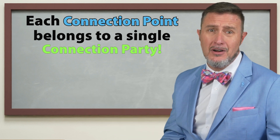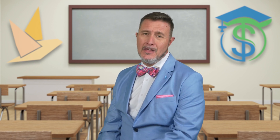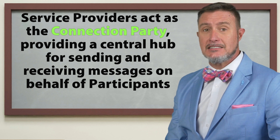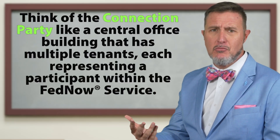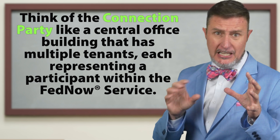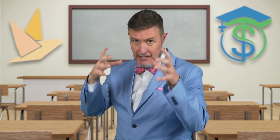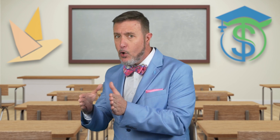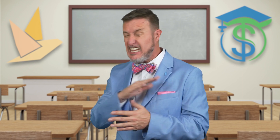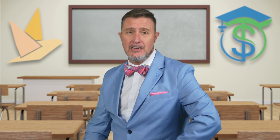Let me simplify this even more. The connection party — just imagine it as a service provider that connects multiple participants to the FedNow service. The service provider acts as the connection party, providing a central hub for sending and receiving messages on behalf of participants or connection endpoints they represent. Think of the connection party like a central office building that has multiple tenants, each representing a participant within the FedNow service. So what's the connection point? The connection point is the multiple tenants — each participant is a designated connection point, similar to having a specific office or workstation within that building where you connect into the whole.